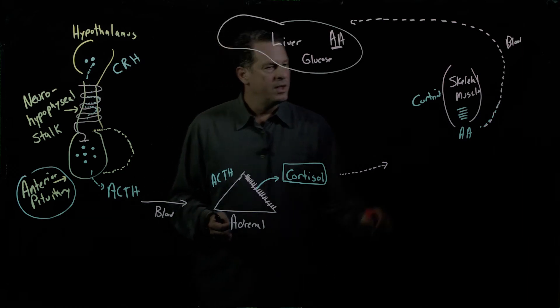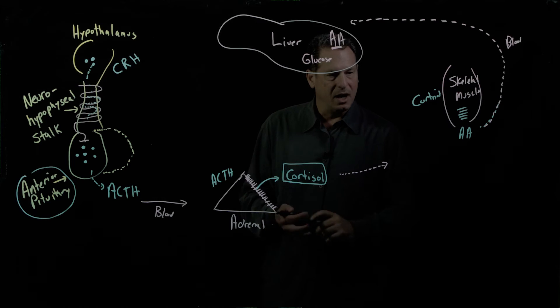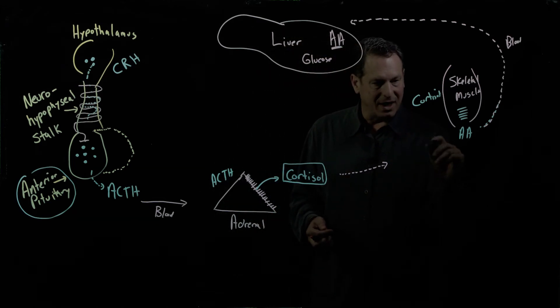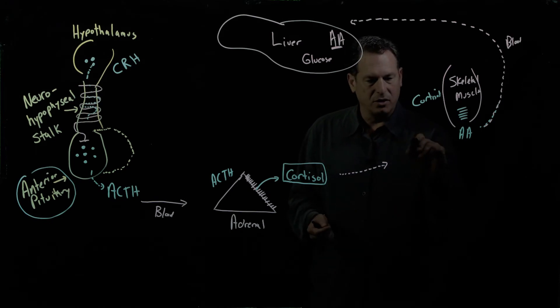So that's a very important action of cortisol. It's about protein breakdown. Another thing cortisol does in skeletal muscle is it impairs the ability of glucose in the blood to get taken up into the skeletal muscle,